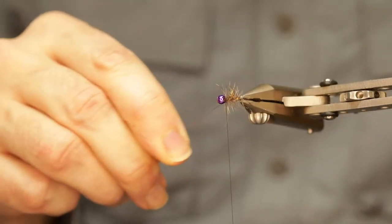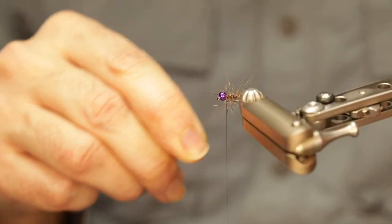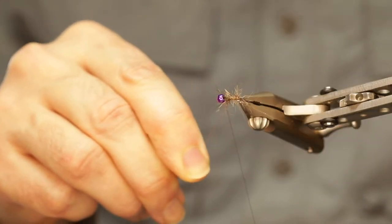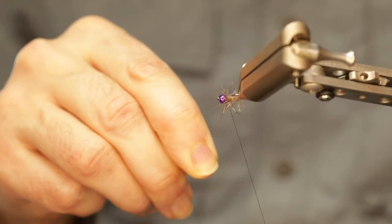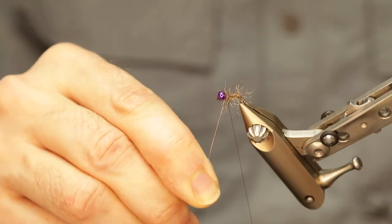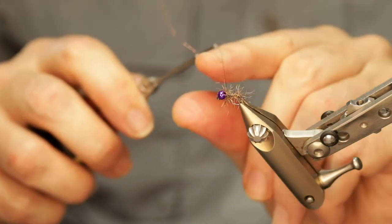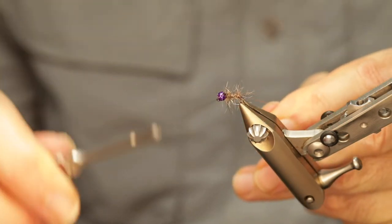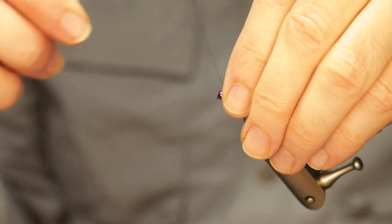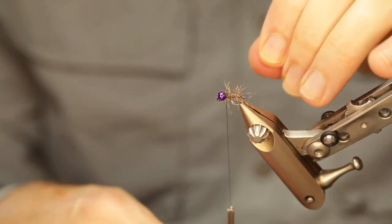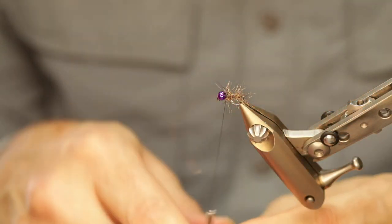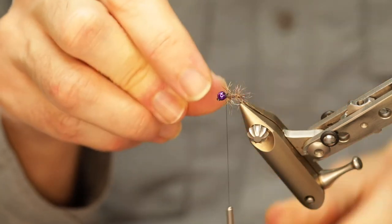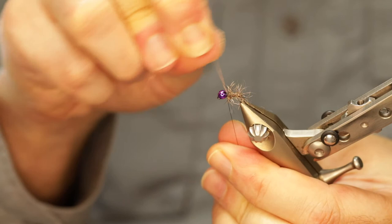Then use your wire and wrap that around the dubbing to secure it in place. And I just sort of wiggle it as I'm rotating the vise to try not to catch too much of the spiky pieces of the fur. Then secure the wire in place with a couple of wraps in front and a couple of wraps behind. And then just break it off with a few twists.